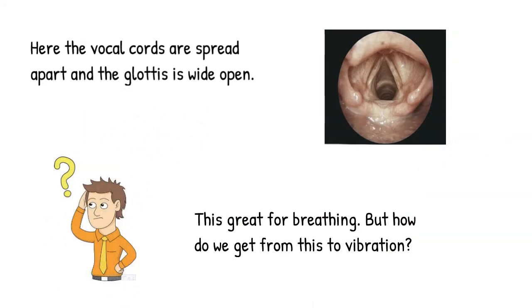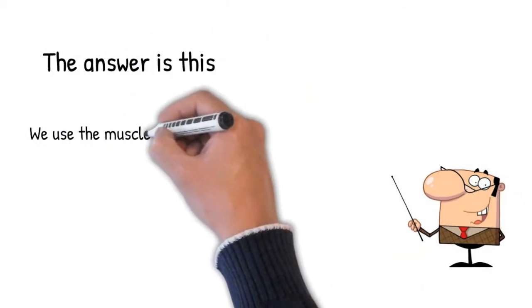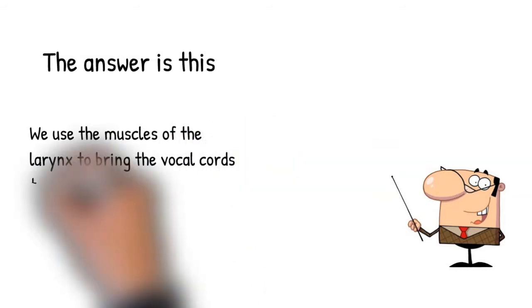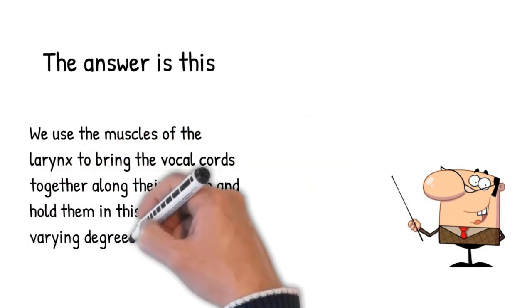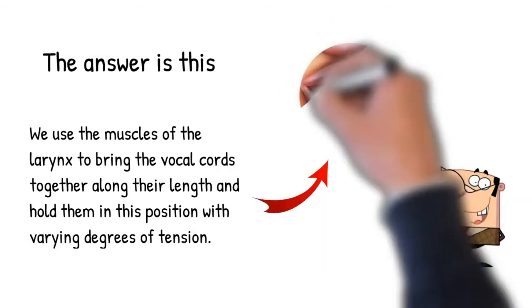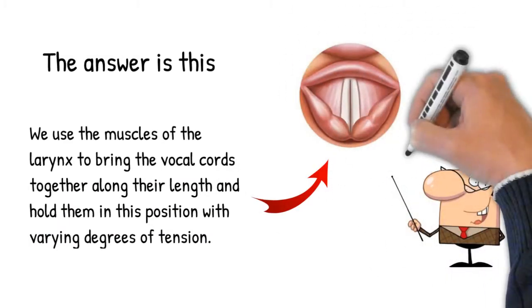But how do we get from this to vibrating vocal cords? Well, the first part of the answer is this. We use the muscles of the larynx to bring the vocal cords together along their length, and we hold them in this position with varying degrees of tension. Giving us something like this.